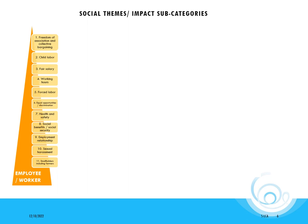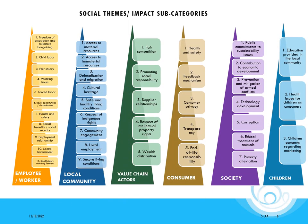For instance, for the employee category, social sub-themes include child labor, the number of working hours, fair salaries, etc. Similarly, there are multiple social themes for each other stakeholder category. In the next slides, we will provide a few examples for each of them.